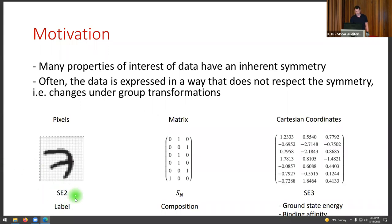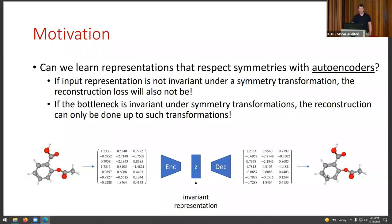These different transformations can be described by so-called symmetry groups — for example, the special Euclidean group in two dimensions or in three dimensions. In contrast to previous talks where equivariant neural networks in supervised learning or invariant atom descriptors were used, here we try to learn representations that respect the symmetry in an unsupervised way by utilizing autoencoders.